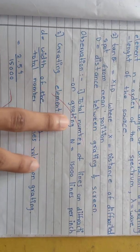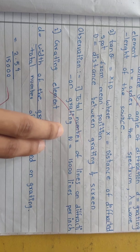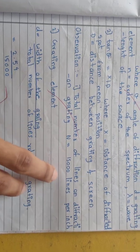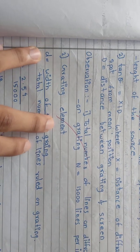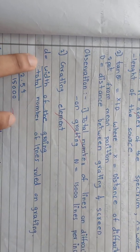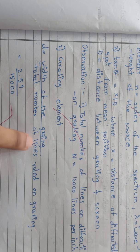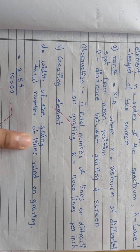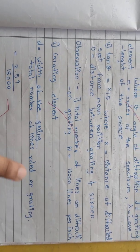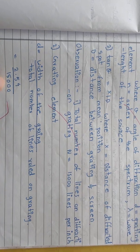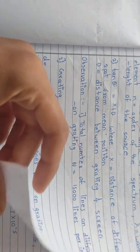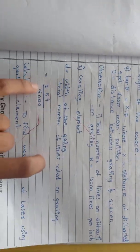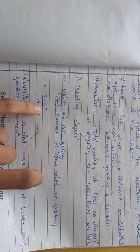Observation: total number of lines on diffraction grating, n equals 15,000 lines per inch. Grating element d equals width of the grating divided by total number of lines ruled on grating. So 15,000 total lines, the width of the grating is 2.54, as given in the procedure.